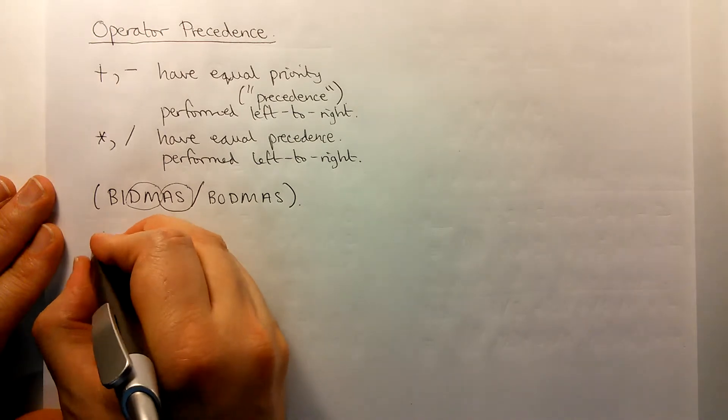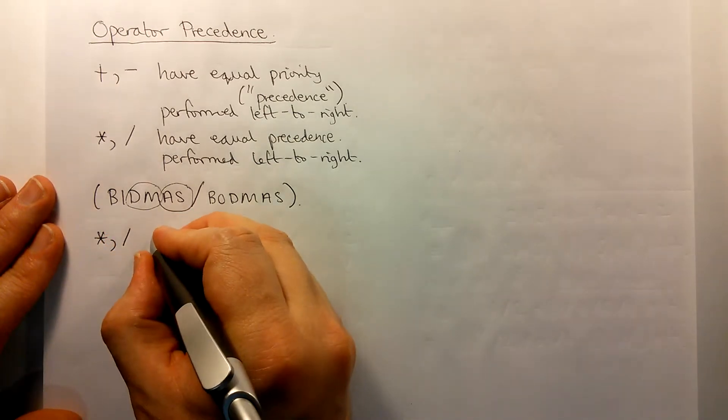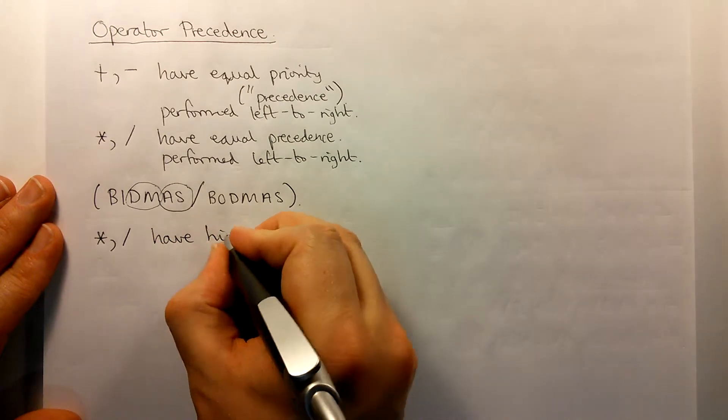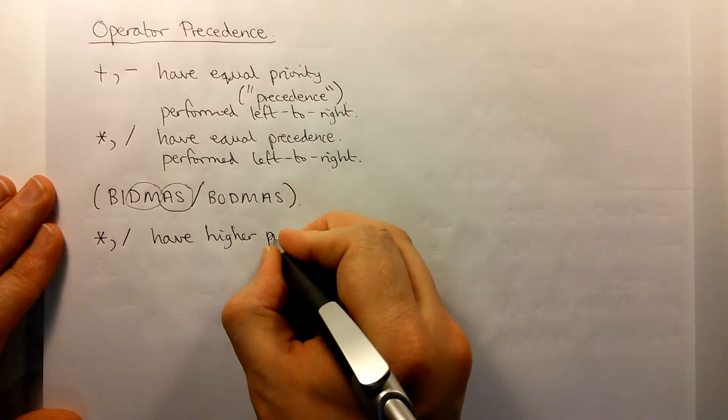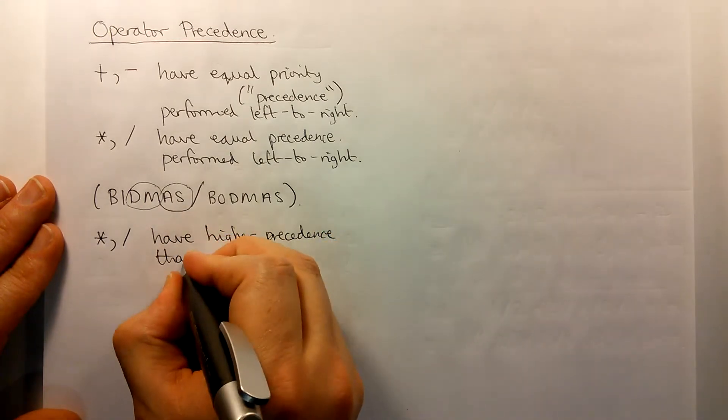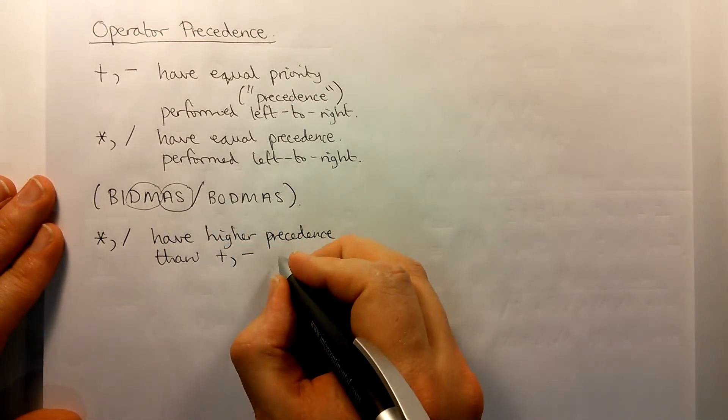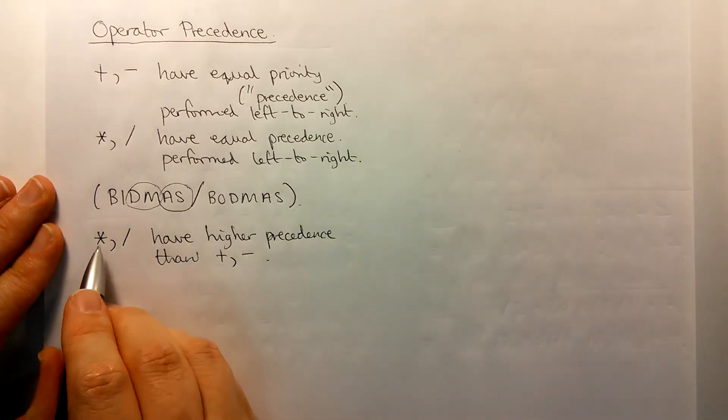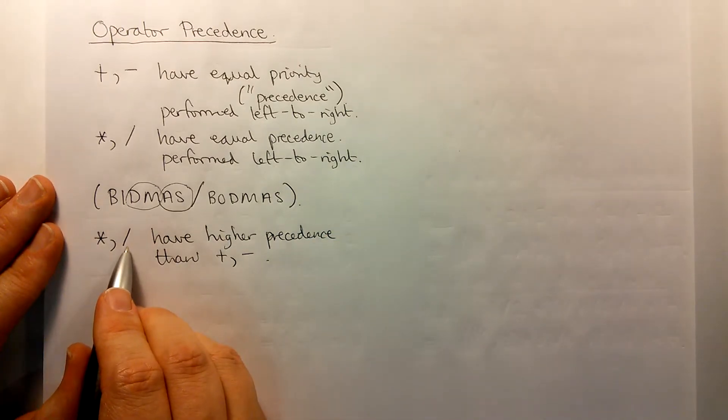So multiply, divide have higher precedence than add and subtract. In other words, multiply, divide are performed first.